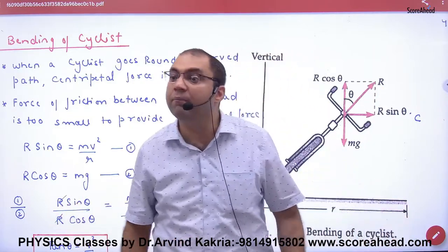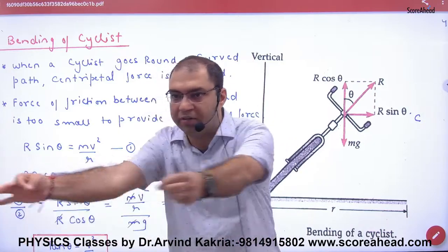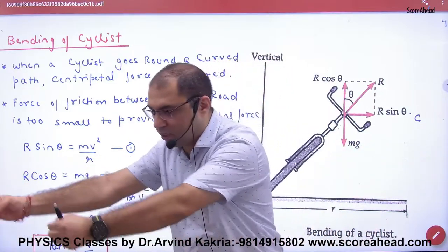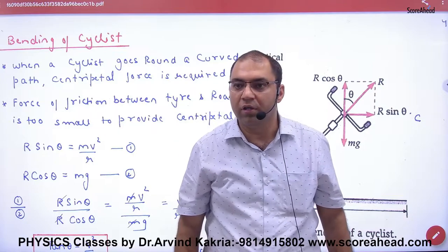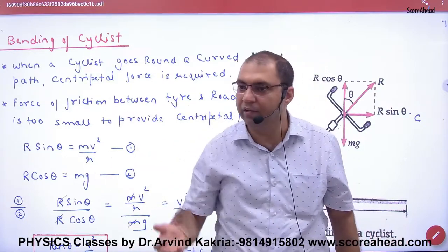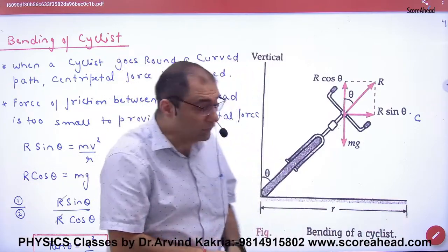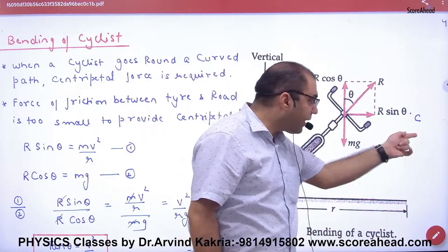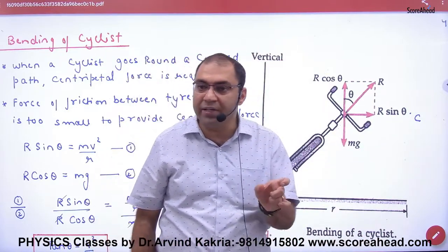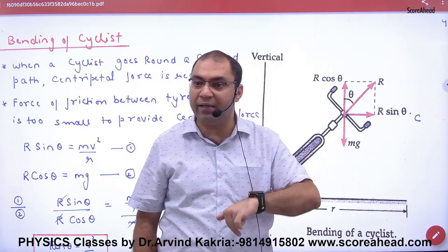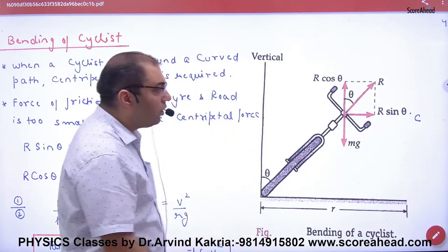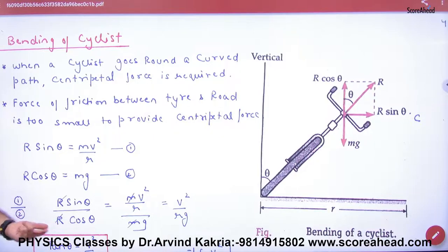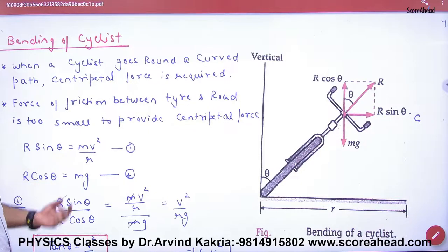If you take a circle like a little child on a cycle, what do you provide? Centripetal force. So what do you do? You bend. Because when you bend, R sin theta acts automatically toward the center. And R sin theta acting toward the center will act as the centripetal force. So R sin theta is equal to mv² / r, where v is the cycle velocity and r is the radius.